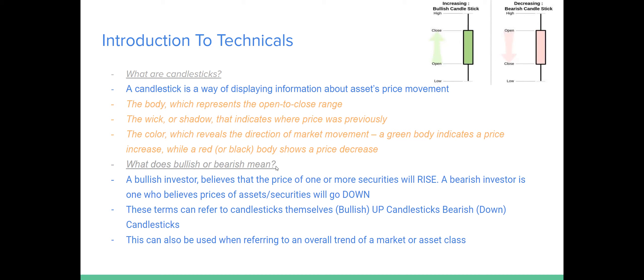What does bullish or bearish mean? A bullish investor believes that the price of one or more securities will rise. A bearish investor believes the price of assets or securities will go down. A bullish candlestick is green and going up; a bearish candlestick is red and going down. These terms refer to candlesticks themselves as well as the overall trend of a market. If you hear someone say a market is bullish, it's been going up; if bearish, the market is trending lower.